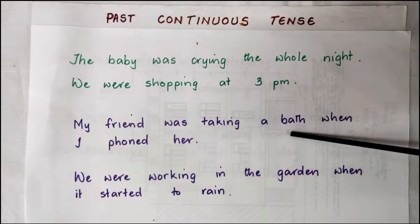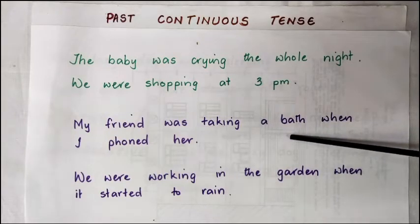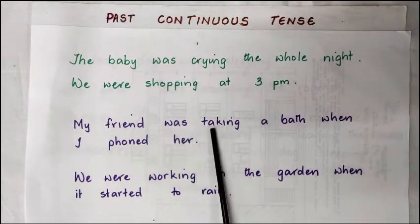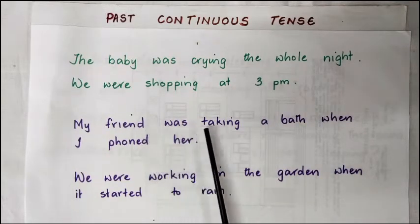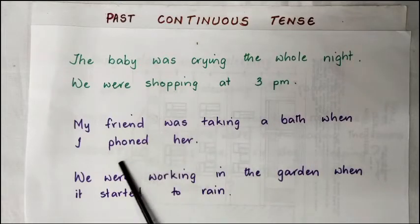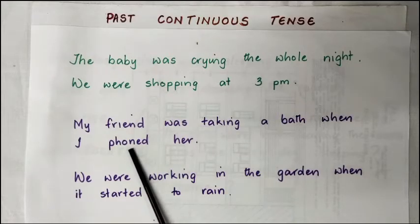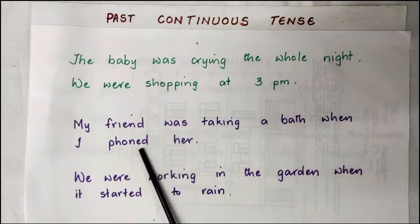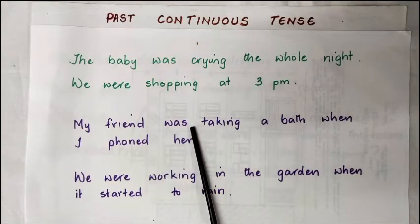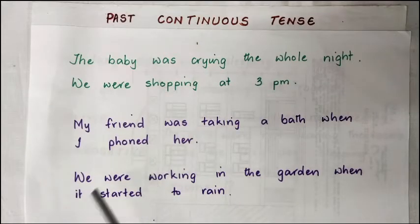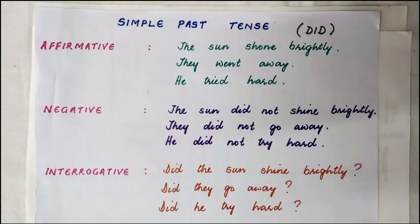Now let's look at the next sentence: 'My friend was taking a bath when I phoned her.' 'Was taking' is in the past continuous tense — 'was' because the subject is singular, and 'taking' is the principal verb with the -ing. 'I phoned her' is in the simple past tense. So we have two tenses in one sentence: past continuous tense and simple past tense. I hope you remember the simple past tense.